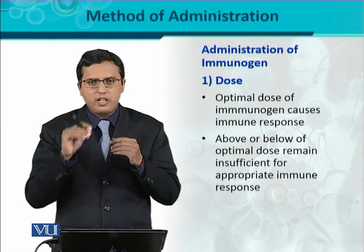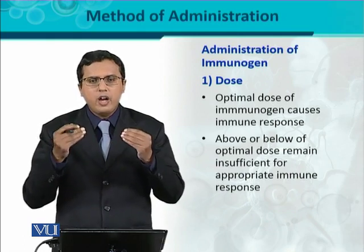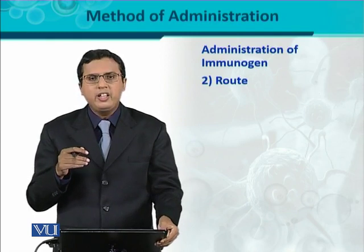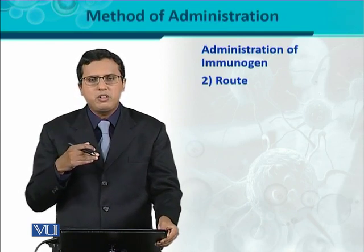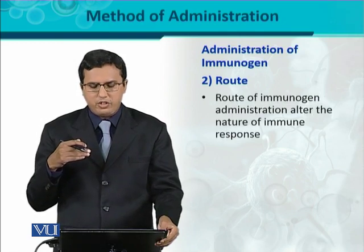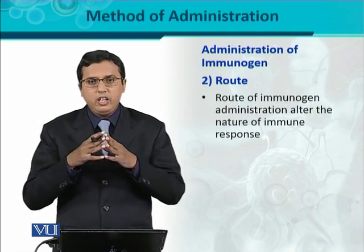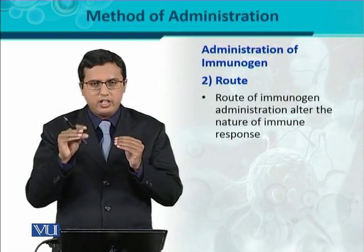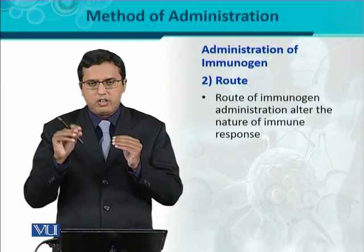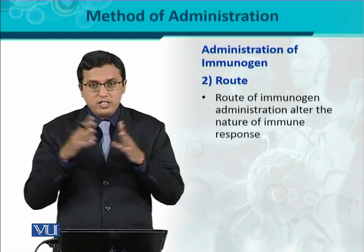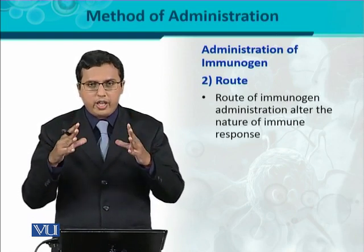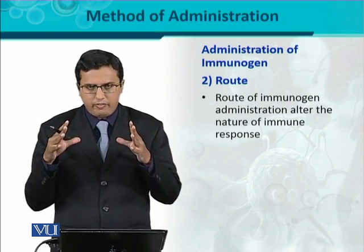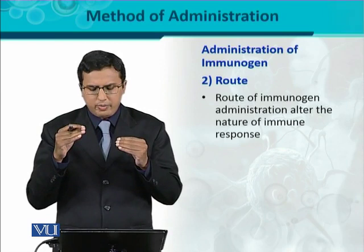That's why while determining the nature of the immunogen, it is very important that the well-estimated optimal dose is introduced inside the body in order to get a good immune response. The second important factor in method of administration is the route of administration — the area or pathway through which the immunogen enters the body.